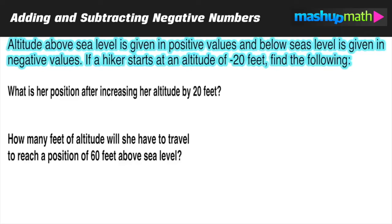So our first piece of information is that altitude above sea level is given in positive values and altitude below sea level is given in negative values. And if a hiker starts at an altitude of negative 20 feet, we have to find the following.